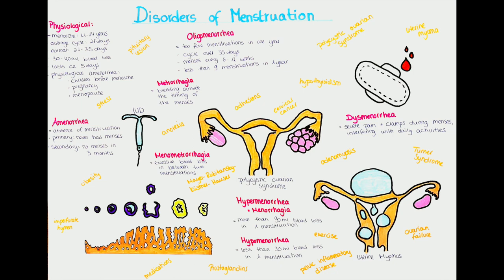The next disorder is hypermenorrhea, also called menorrhagia. In this disorder, women have much heavier menstrual bleeding than normal. As noted, it is normal to lose around 30 to 40 milliliters of blood per menstruation; in hypermenorrhea, the blood loss is more than 90 milliliters. The opposite, hypomenorrhea, would be a blood loss of less than 30 milliliters.